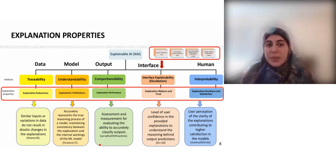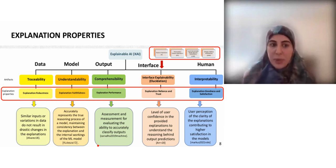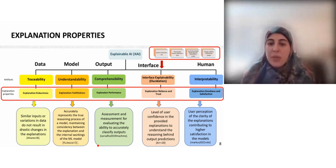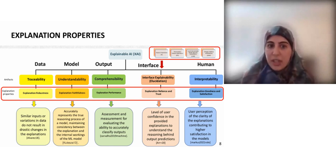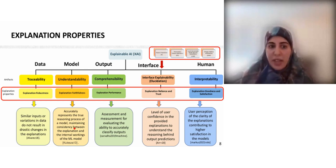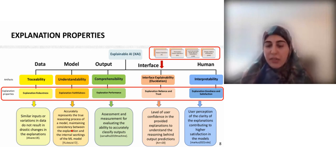In our research, we related the explanation properties to the framework proposed by ARIETTA. By considering these explanation properties, we can evaluate how well the explainability model fulfills requirements by providing robustness, faithfulness, performance, reliance, and satisfaction of explanation. Explanation robustness is closely connected to traceability, ensuring similar inputs do not result in drastic changes in generated explanations. Explanation faithfulness is tied to understandability, representing the ability of an explanation to accurately reflect the true reasoning process of the machine learning model.